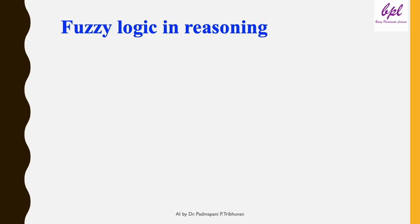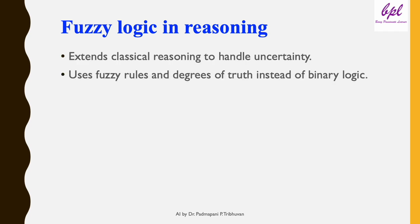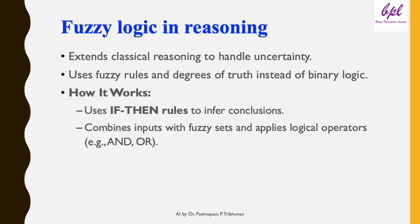Fuzzy reasoning is a method that extends classical logical reasoning. Instead of binary true or false outcomes, it works with degrees of truth, allowing it to handle real-world situations where sharp boundaries don't exist. Fuzzy reasoning relies on if-then rules. For example: if the temperature is high and the humidity is high, then the fan speed should be high. Fuzzy logic combines inputs like temperature and humidity, maps them to fuzzy sets, and uses operators like AND or OR to infer the conclusion.